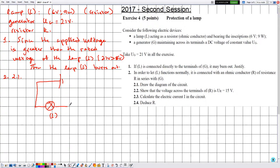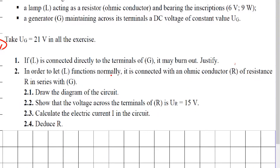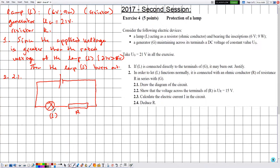Because L is functioning normally, the applied voltage across it equals the rated voltage of 6 volts. The battery voltage is 21 volts. This sets up the context for question 2.2.